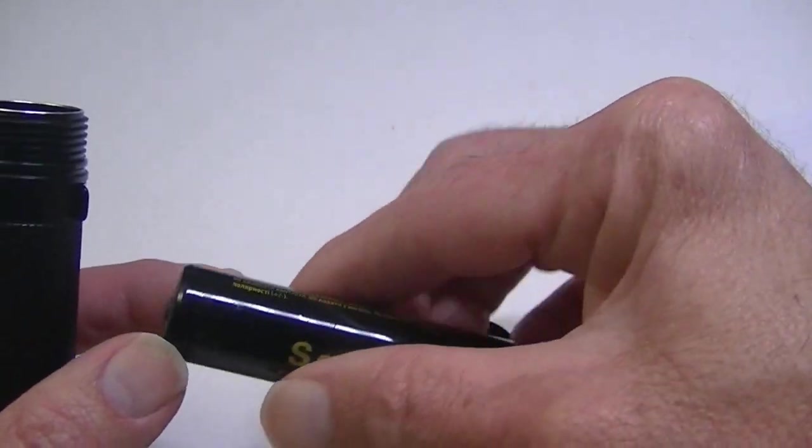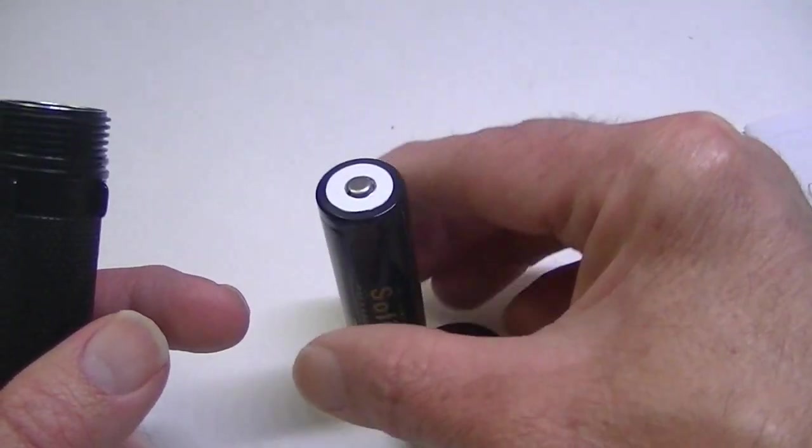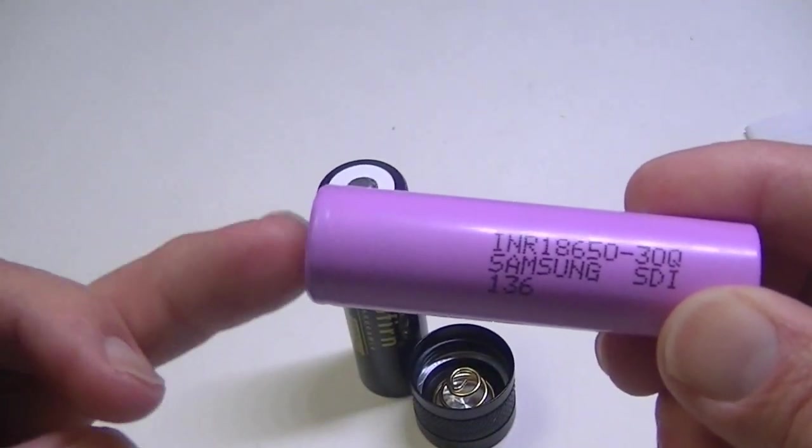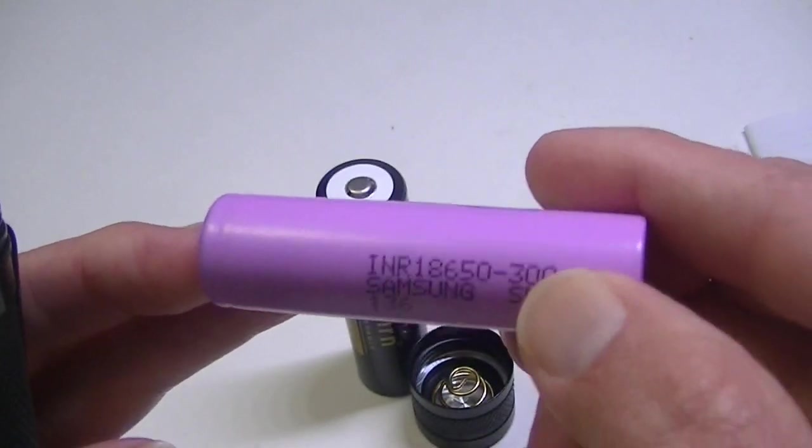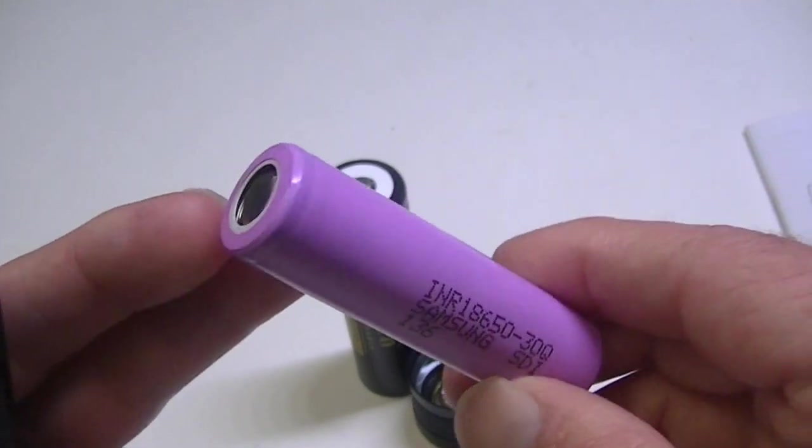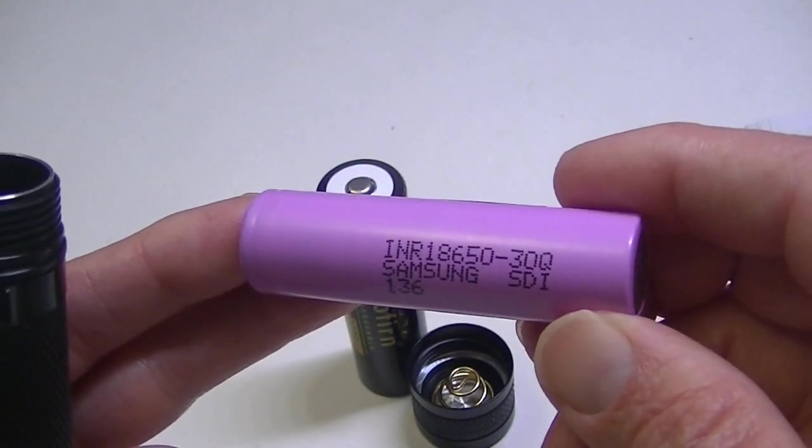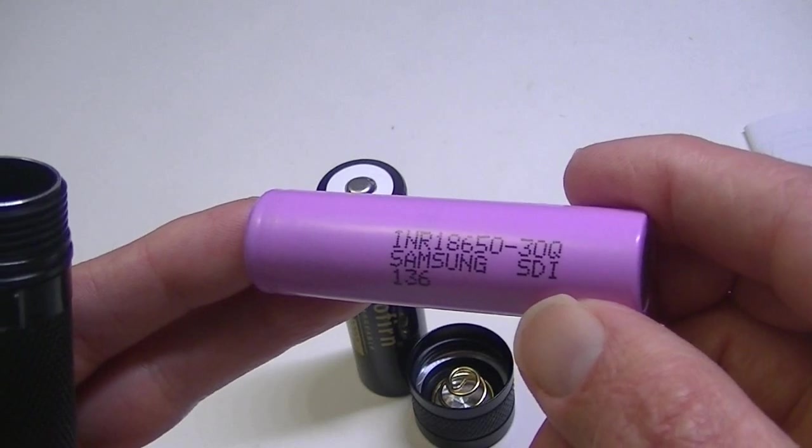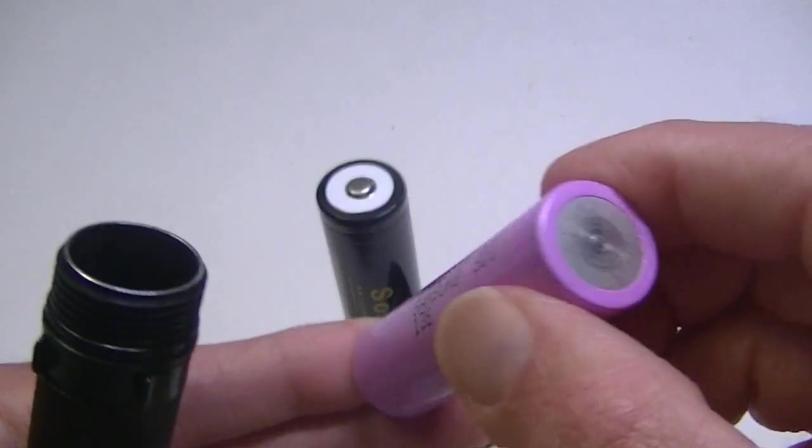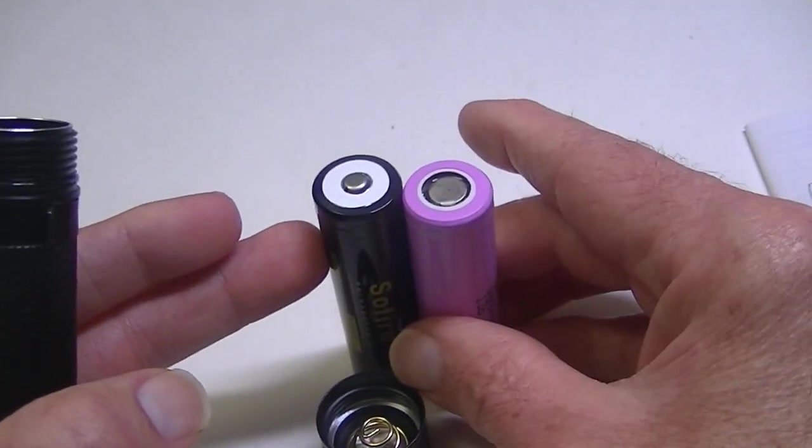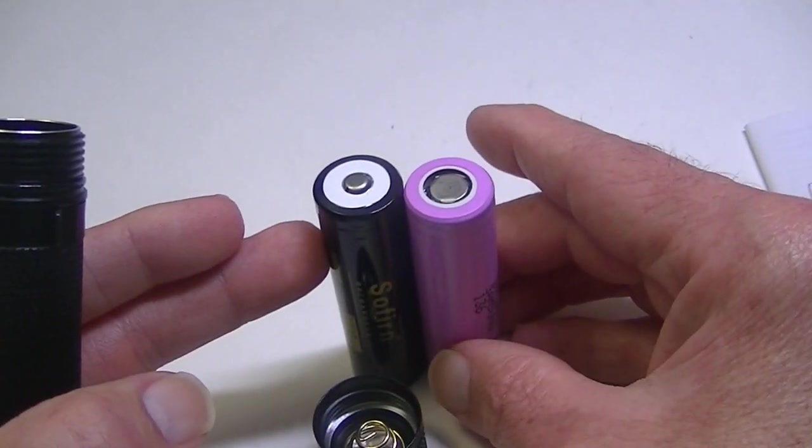This light also accepts other types of 18650s, namely flat tops, IMRs, that kind of thing. Or this is an INR, but again it's the flat top. The famous panel - Samsung, whether it's a Panasonic or not - Samsung 30Q. So it uses this battery just as well as it does the Sofern that they supply.